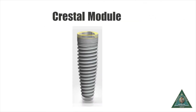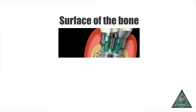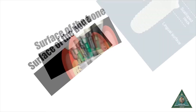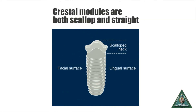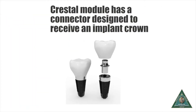What is a crestal module and where does it get its name from? This is the portion of the implant that engages the crest of the bone. Crestal modules can be polished or they can contain micro-threads. They can be either scalloped or straight, both of which have an equivalent success rate.